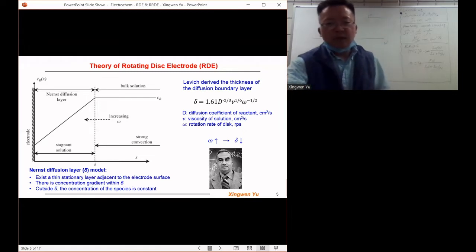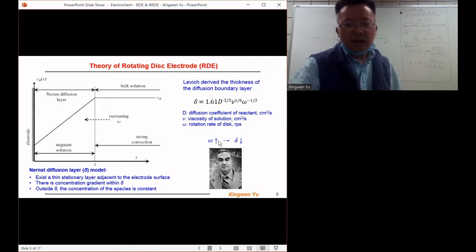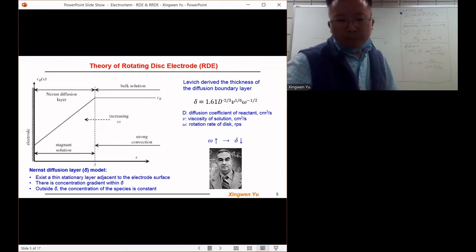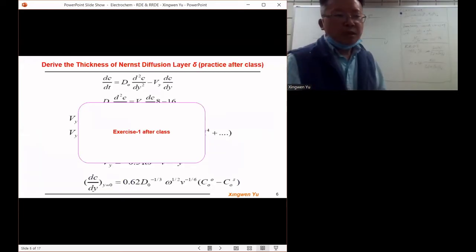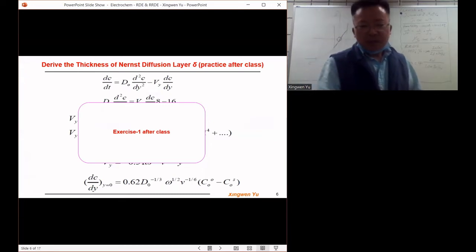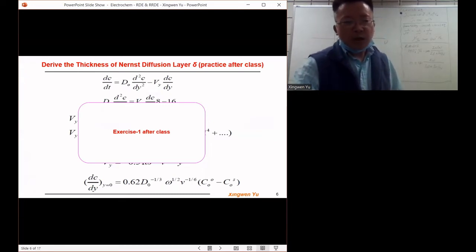We can see from this expression, if we increase the rotating speed omega, delta and the Nernst diffusion layer will become thinner, become smaller. This picture is Levich. Now you may be curious how Levich developed the expression for the Nernst diffusion layer delta, so I have summarized the derivation process for this equation.